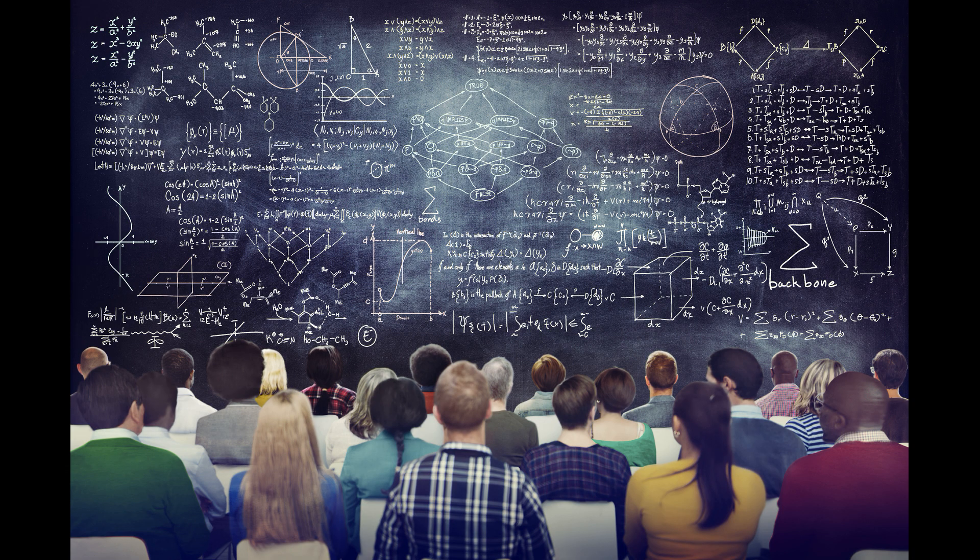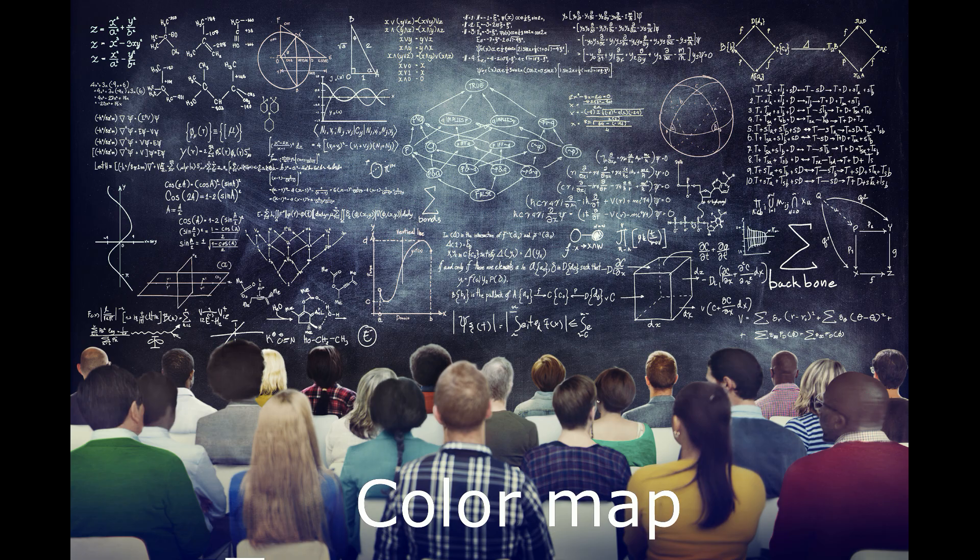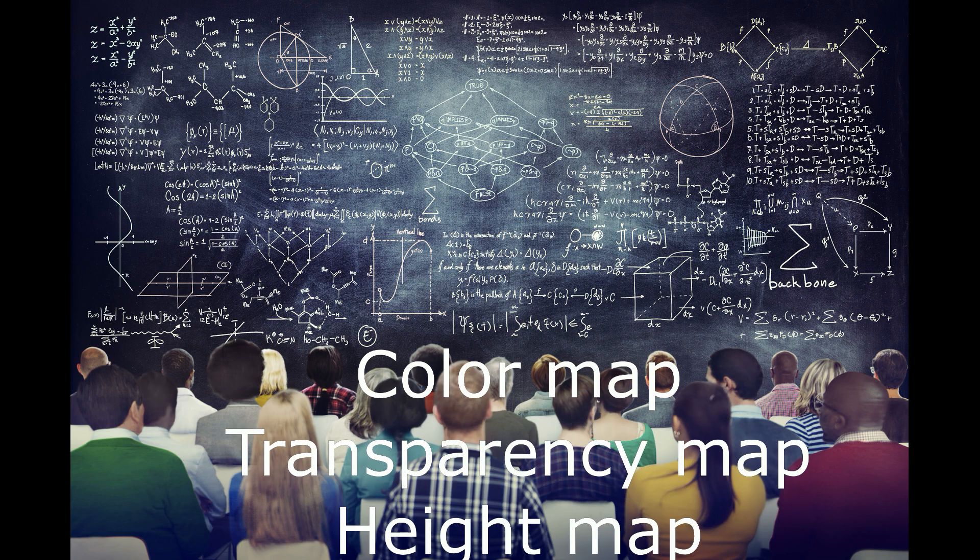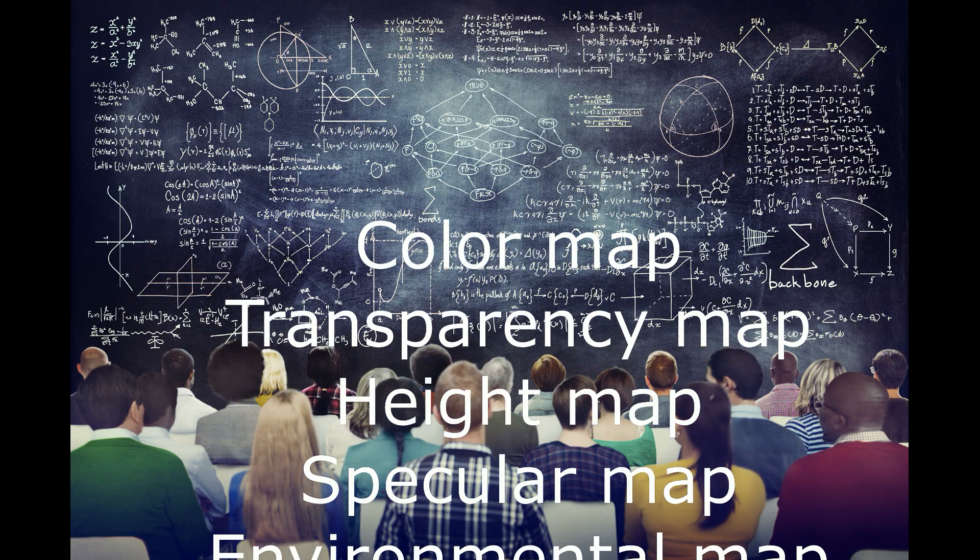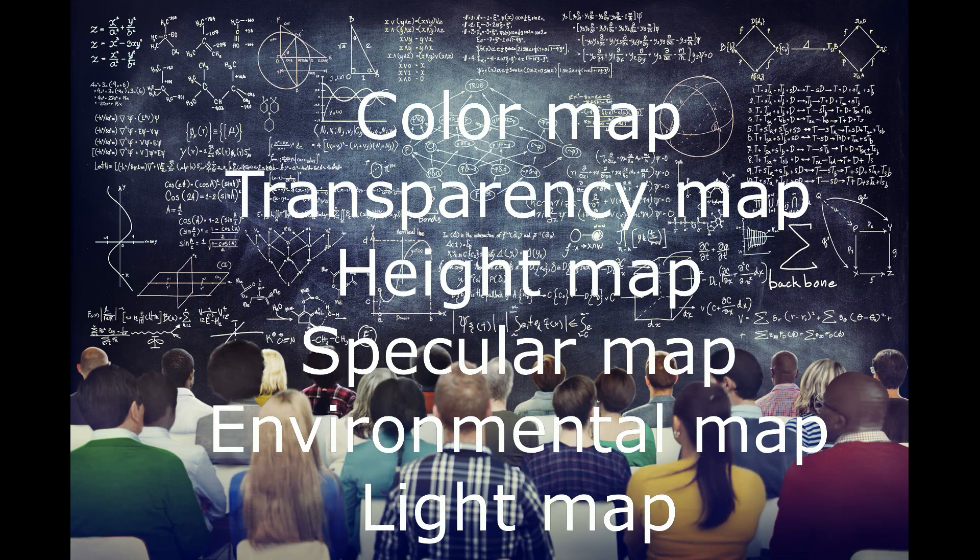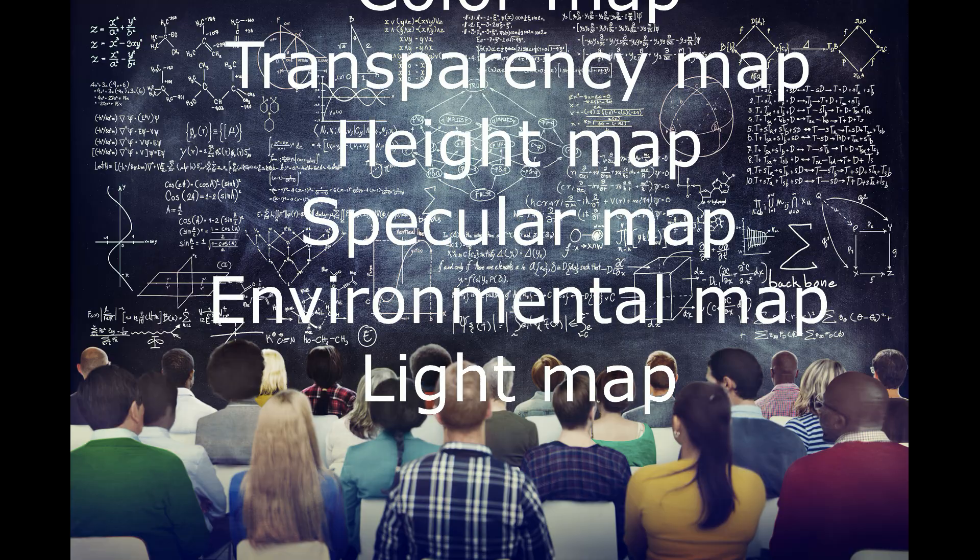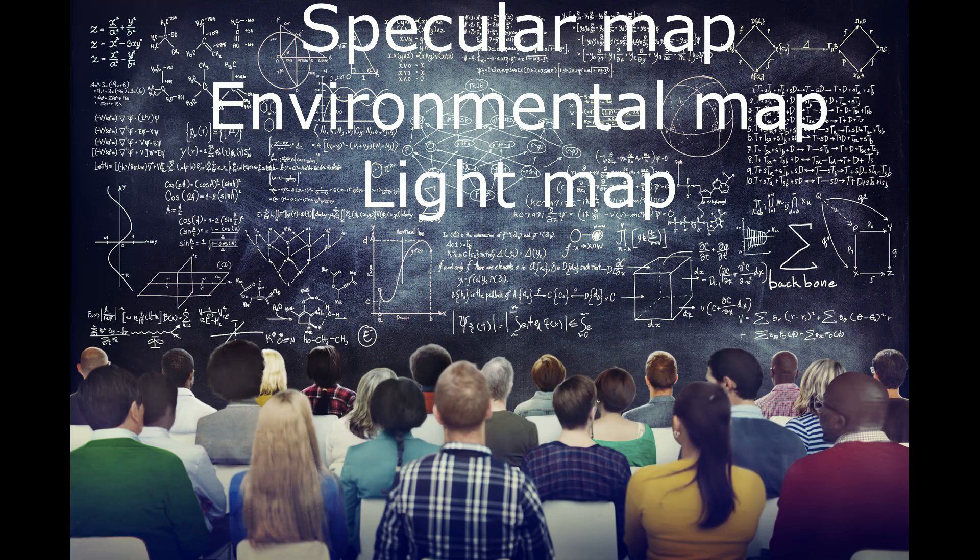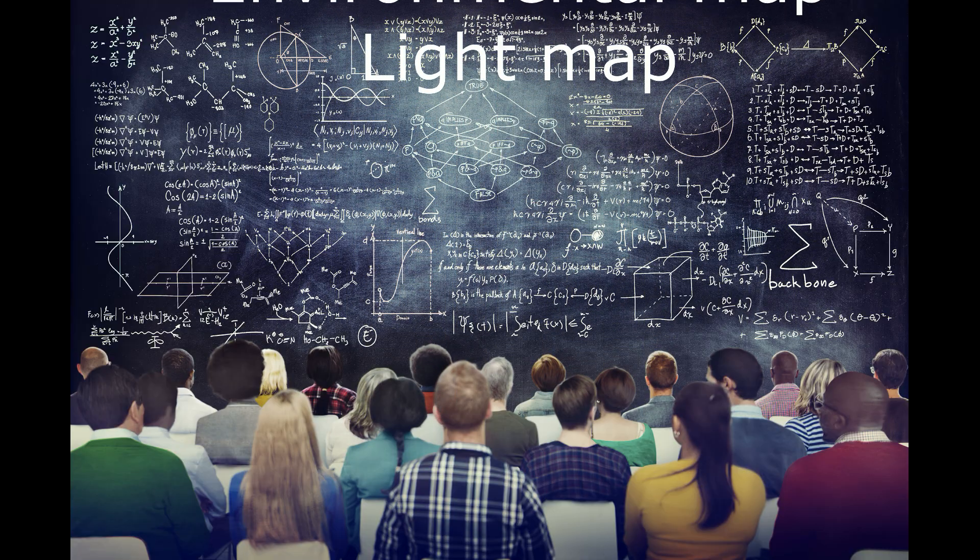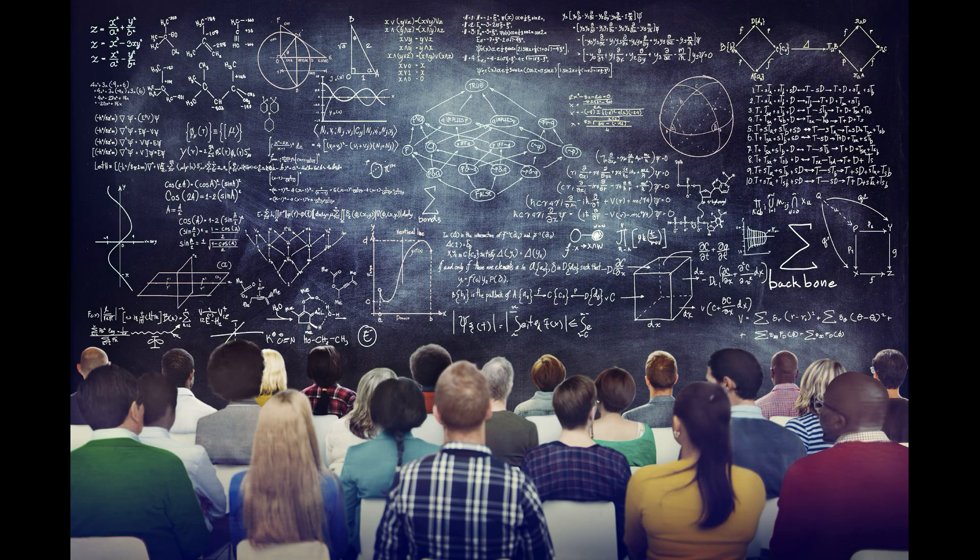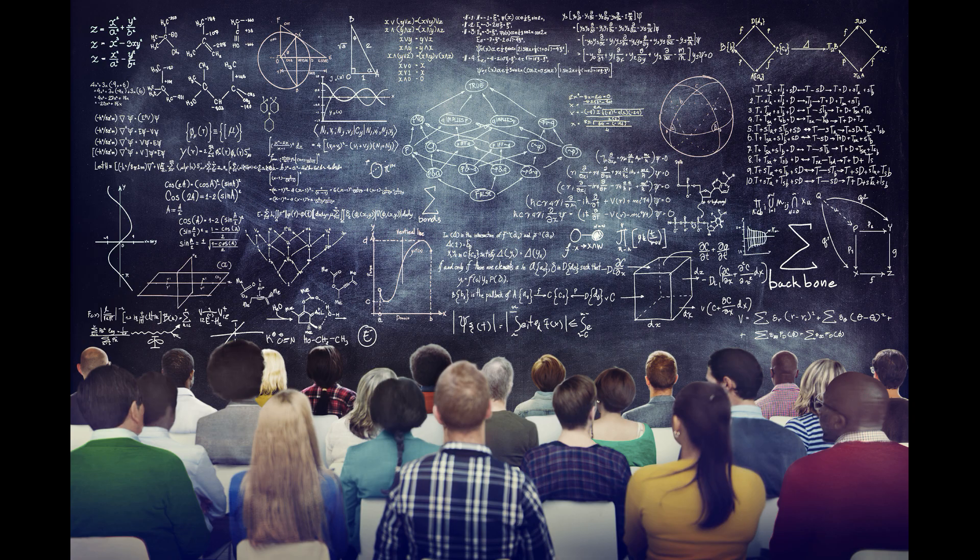Let's talk about maps and texture types. When we look at maps in general you have color maps, transparency maps, height maps, specular maps, environment maps, light maps with lighting information and a few others.